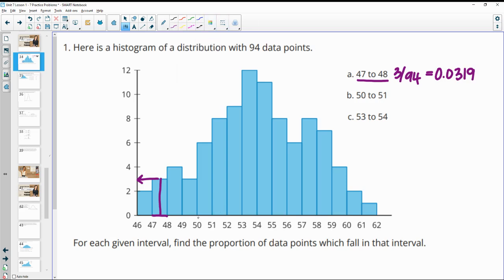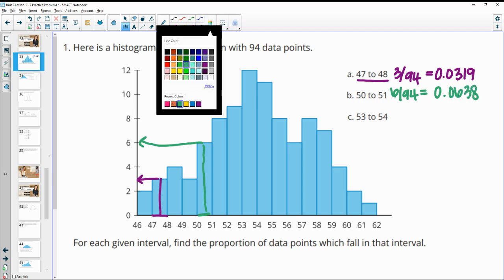The second one says 50 to 51, so we're right here. If we go up here and go over, that's six out of 94 data points. Divide in your calculator and you'll get 0.0638.